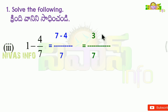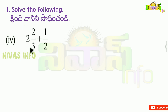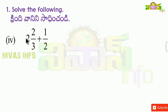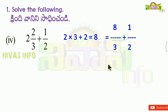The next problem is one mixed fraction plus one proper fraction. If we have a mixed fraction, we convert it to an improper fraction first. For the first one, we write the denominator into the integer plus the numerator: 2 into 3 plus 2 equals 8. So we get 8 by 3 plus 1 by 2.